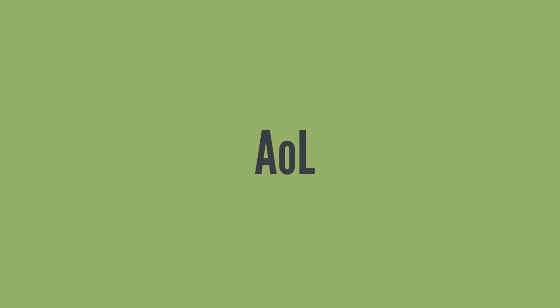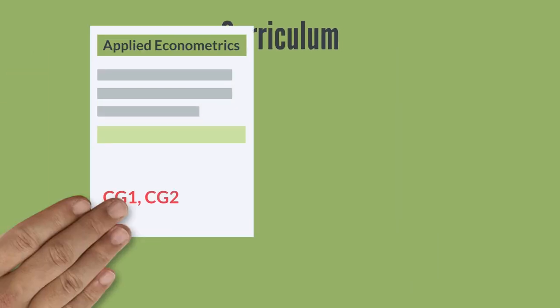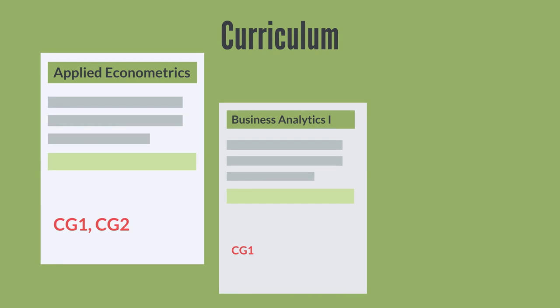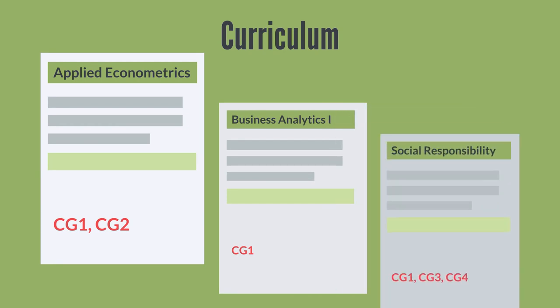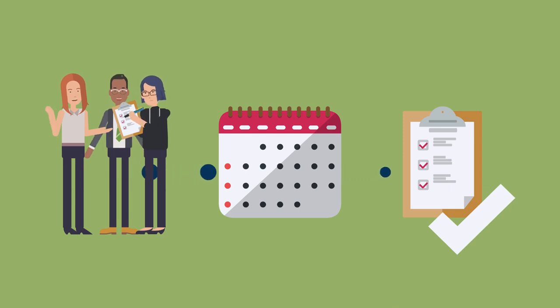AOL is a tool to ensure that these competencies are widely accomplished. To this end, we map the courses of the program that teach one or more of the desired competencies. All programs are controlled on an ongoing basis.